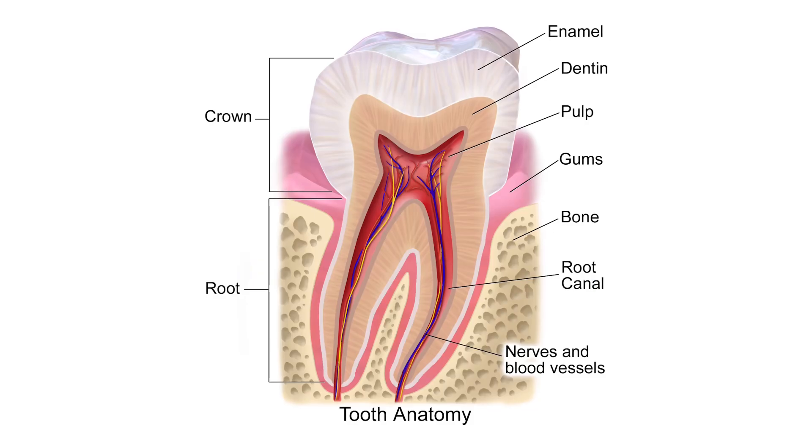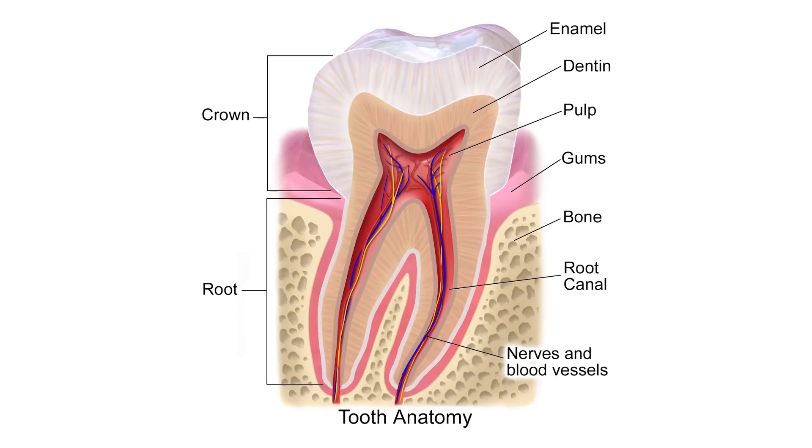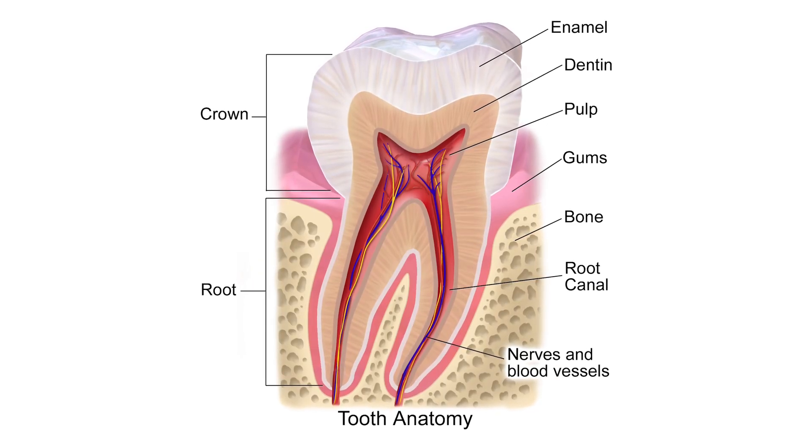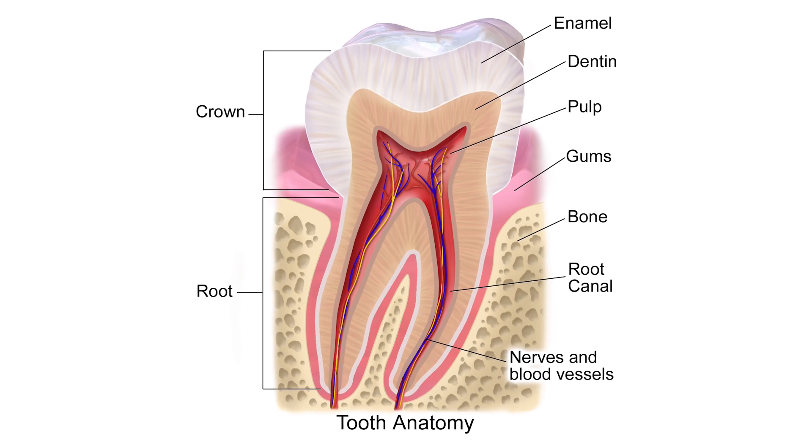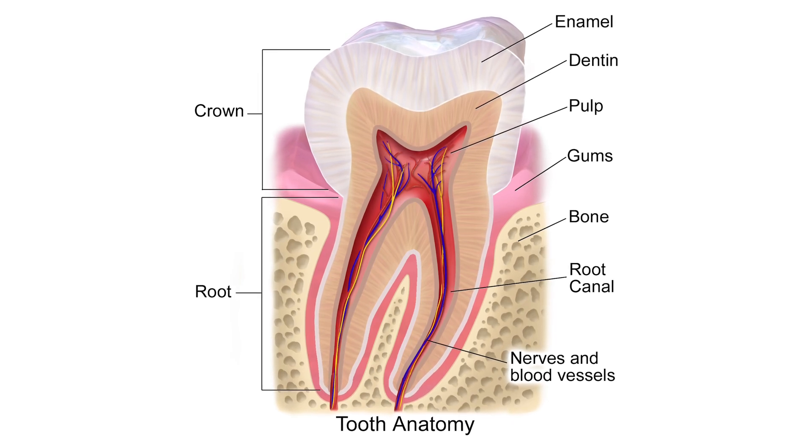Let's go over a quick anatomy lesson. Your tooth is made up of your enamel, your dentin which is the inner layer of the tooth, and also the root of the tooth which is what's in the bone. The enamel is the outer layer, but it's also the hardest and strongest layer. Actually, your enamel is the hardest substance in your body, but that doesn't mean it's invincible.